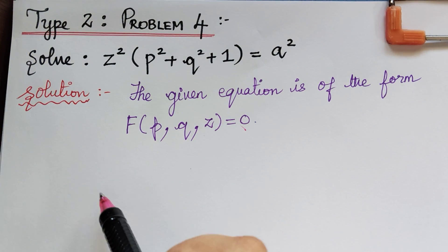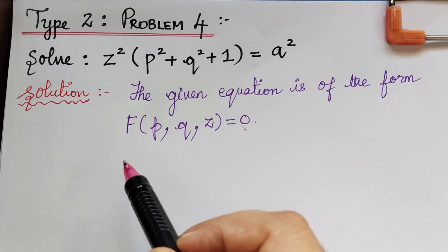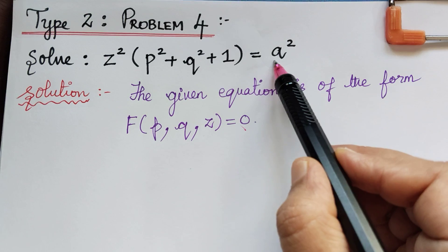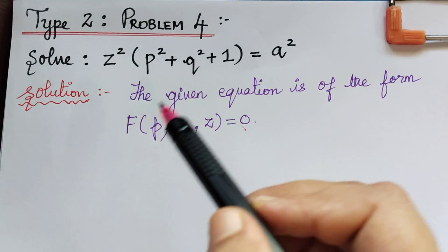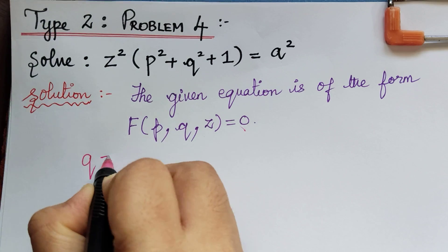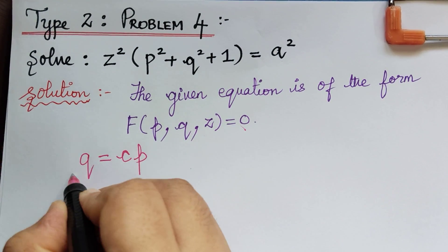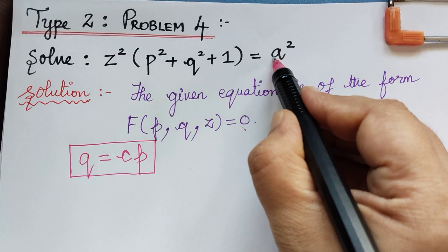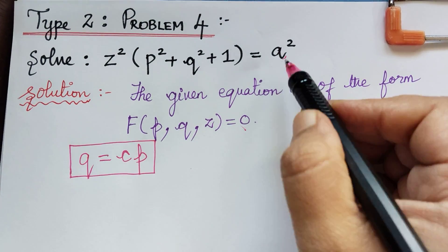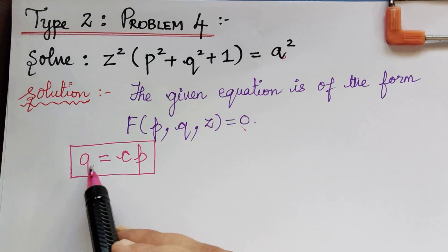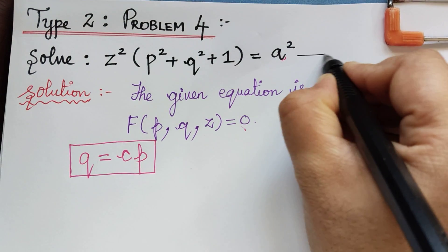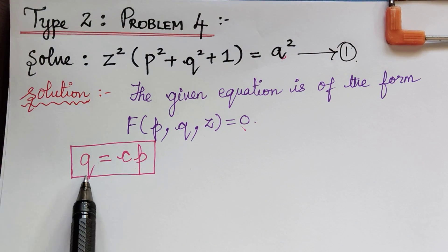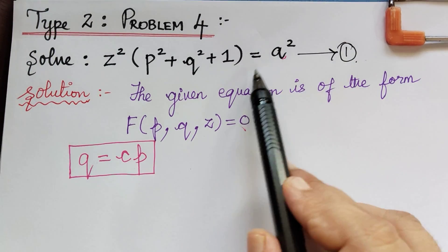Since this is an arbitrary constant, we have to make a substitution for q. Usually we make the substitution q = ap, but now because the arbitrary constant is already 'a' in this equation, we have to use another new constant — that is, q = cp. We will make a substitution of q equal to cp in equation 1.